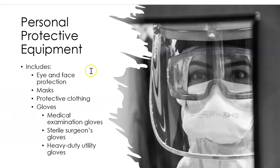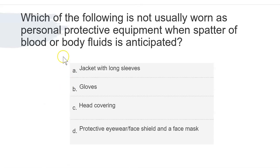PPE is a key part of infection control. We wear a mask, face shields, protective clothing like gowns, and other PPE. Question: Which is not usually worn as PPE when spatter of blood or bodily fluids is anticipated? Options include jacket with long sleeves, gloves, head covering, protective eyewear/face shield, and face mask. The answer is head covering — a scrub cap is not mandatory.